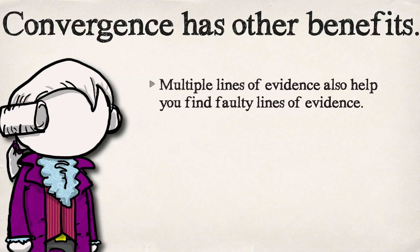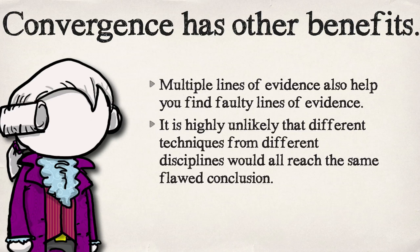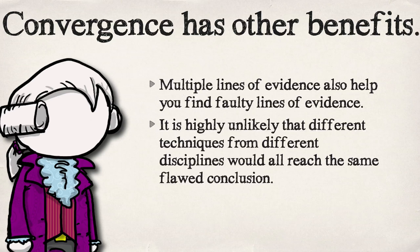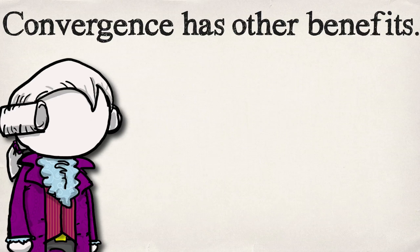Multiple lines of evidence has another big advantage: it helps validate the techniques you use. If you do 15 different things and they all get the same answer except for one, that last one is where you should be paying attention — is there something wrong with that technique, or does this reveal some terrible error in your whole study? It's very unlikely that things will converge on the same answer but all be incorrect. If they were all incorrect you would expect their answers to be all over the board.